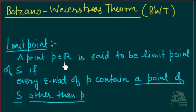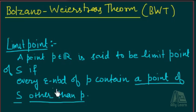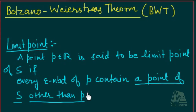A point P belonging to R is said to be a limit point of S if every epsilon neighborhood of P contains a point of S other than P. Yani har ek neighborhood mein ek point hona chahiye. Toh kya aisa possible hai ki kisi ek neighborhood mein P ke kisi ek neighborhood mein ek hi point ho, ya phir 2 points ho, ya phir 3 points ho, ya baqi sare neighborhoods mein ek hi point ho?